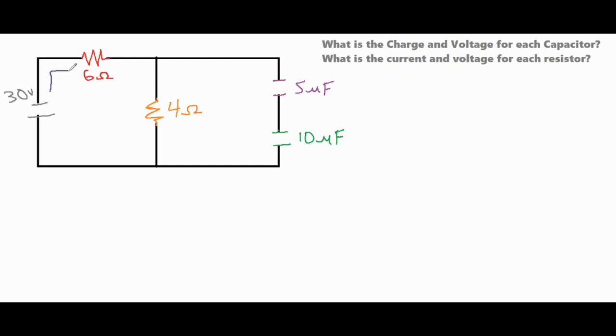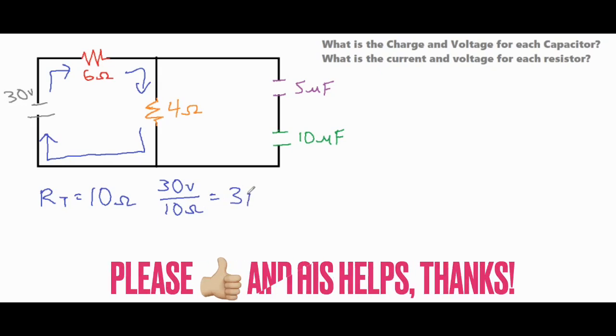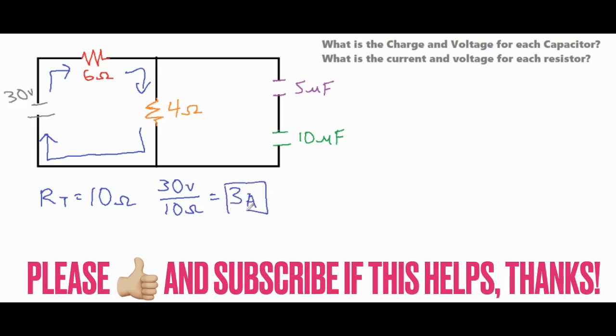At that moment, we basically have a single loop that the electrons are flowing through. In that single loop, we have a 6 and 4 ohm resistor, which would have an equivalent or total resistance of 10 ohms. So if we just go ahead and use Ohm's Law, we can say we have a total voltage of 30 volts and a total resistance of 10, which would then allow for 3 amps of current to flow.